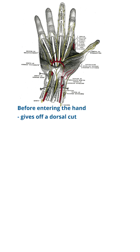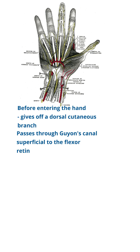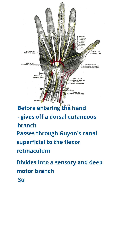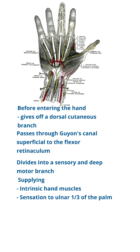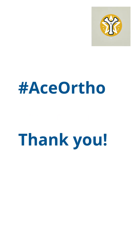Before entering the hand, it gives off a dorsal cutaneous branch and then passes through Guyon's canal, superficial to the flexor retinaculum. Here it divides into a sensory branch and a deep motor branch, supplying the intrinsic hand muscles and sensation to the ulnar one third of the palm as well as the ulnar one and a half digits.